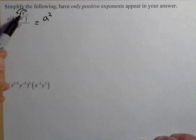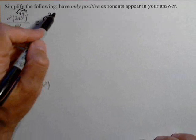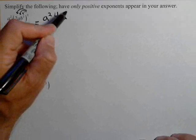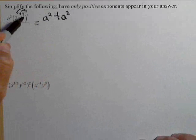So we're going to end up with 2 squared, which is 4, a squared, and then b cubed squared.